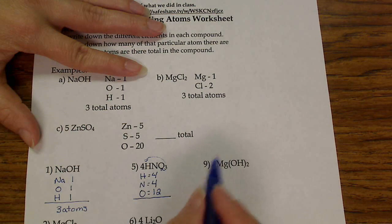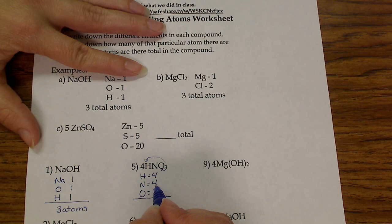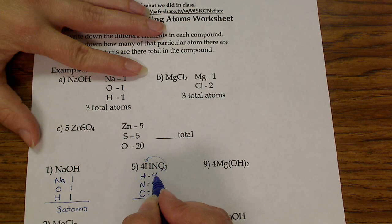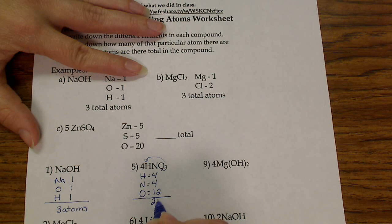And then I'm going to total it up. Twelve plus four is sixteen, plus four is twenty. Twenty atoms.